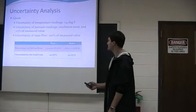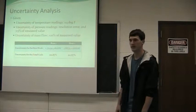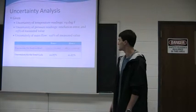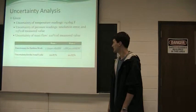Alright, here's my uncertainty analysis. These were given to us in the manual: uncertainty of the temperature readings, which was plus or minus 4 degrees, uncertainty of the pressure readings had the resolution error and then plus or minus 5 percent of the measured value. Then we had the uncertainty of the mass load was plus or minus 10 percent of the measured value. So using the equations I learned from instruments and measurement, I calculated the uncertainty.